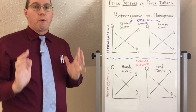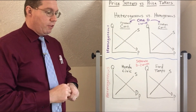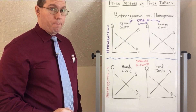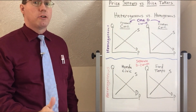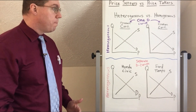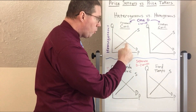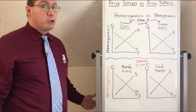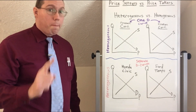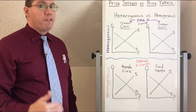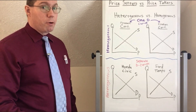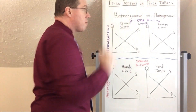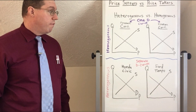Here's the big idea from this segment: price setters have a downward sloping demand curve, but price takers have a horizontal demand curve. Every time we look at a market graph, we see a downward sloping demand curve. But if the demand curve is horizontal, there is no relationship between price and quantity. For perfect competition, that is exactly the case — perfect competitors don't have a relationship between the quantity they produce and the price they charge, because they are price takers.